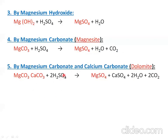Magnesium sulfate and calcium sulfate — when calcium and sulfate combine, the compound formed is gypsum. If the carbonate is involved, hydrogen can be released as water.